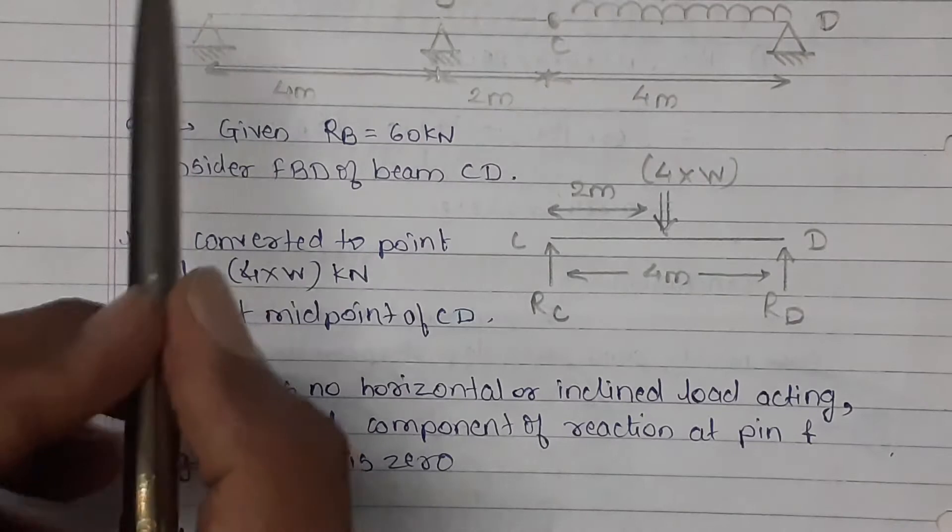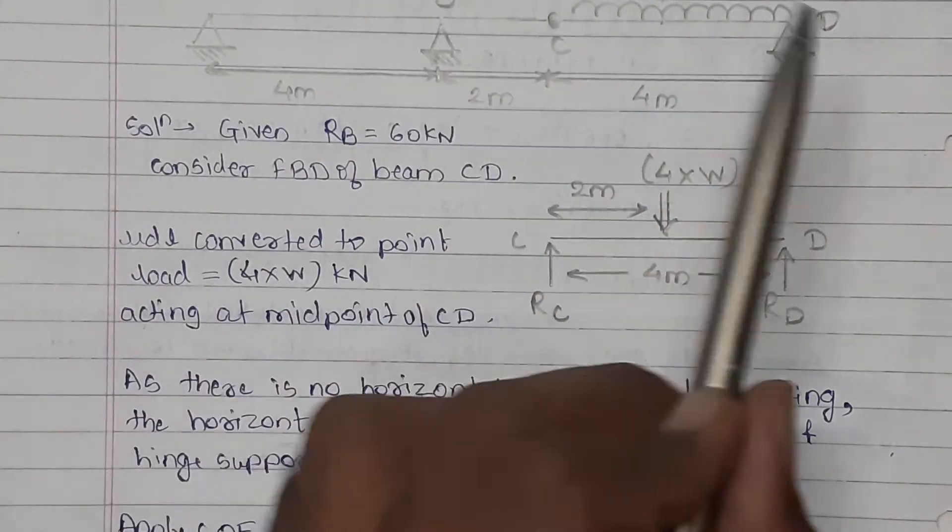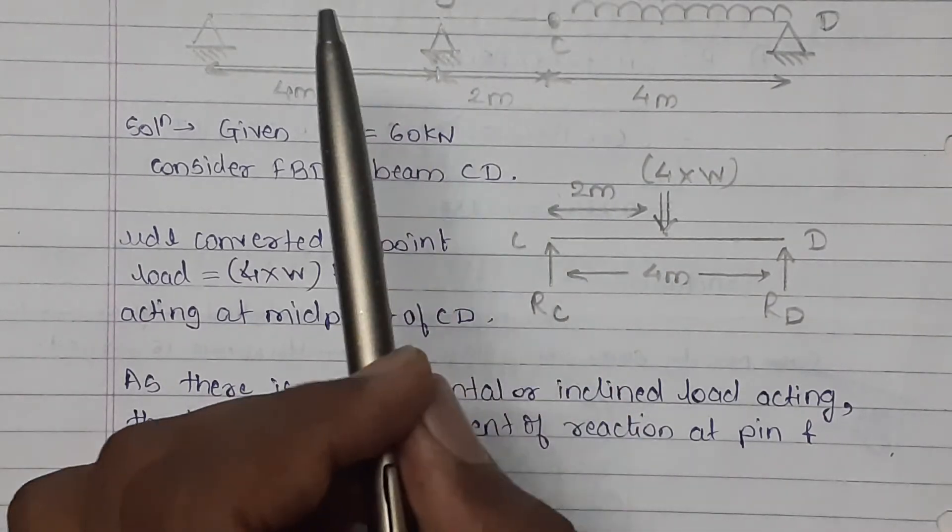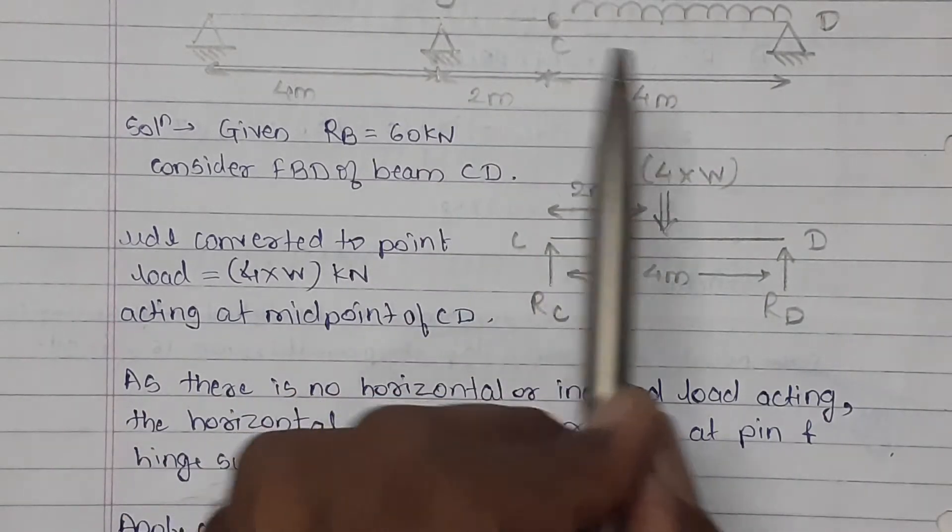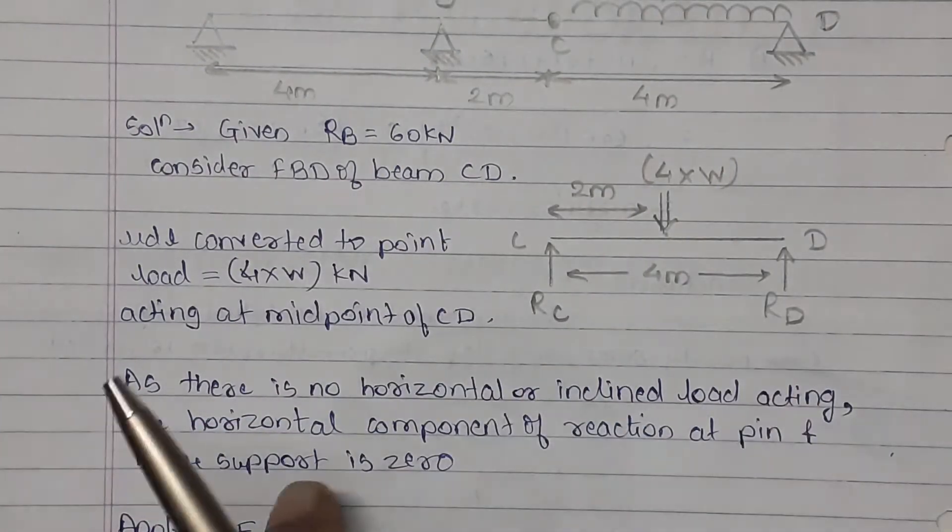So we will consider horizontal component of the reaction at A, B, D as well as at the internal hinge C. Horizontal component will be considered equal to zero. We will apply only vertical reactions at all the hinge supports.